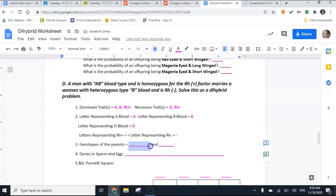Now we have to figure out the parents. Okay, so it says dad has AB blood, so we already know he's gonna have an A and a B. And he's homozygous for Rh positive—that means he's got two of the same and he's positive, so he's got to be plus plus.